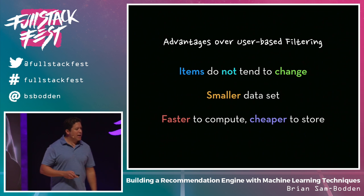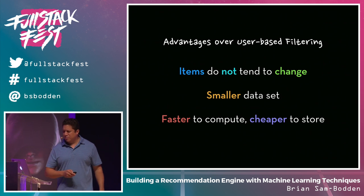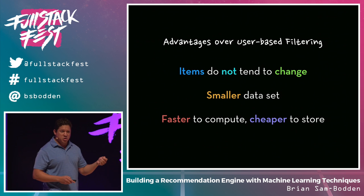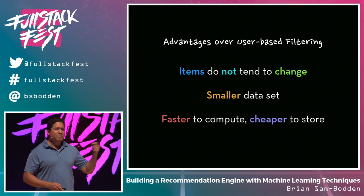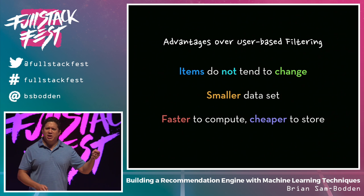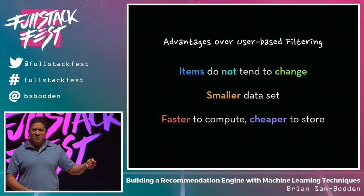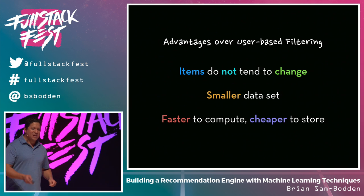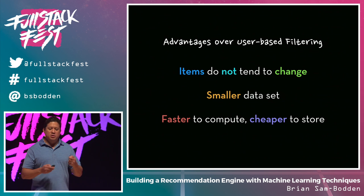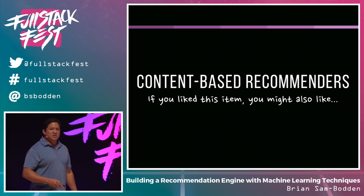The advantage of item-based filtering is that items don't tend to change. Users change. A book that was written is that book — maybe opinions will change over time. With a smaller data set, it's faster to compute and you don't have to recompute as often because items don't tend to change. The content-based recommendations are the ones that really excite me — where you actually do machine learning to turn the problem into a machine learning problem and classify items according to their content, and also classify users according to their content.